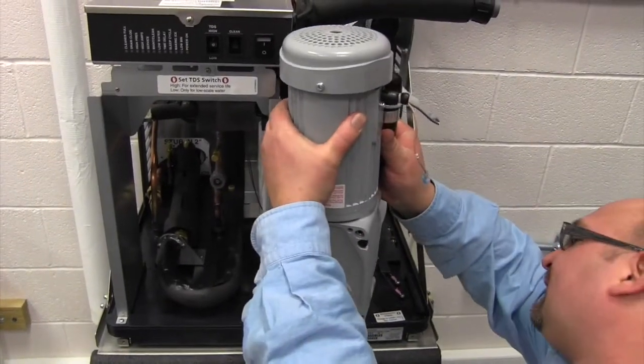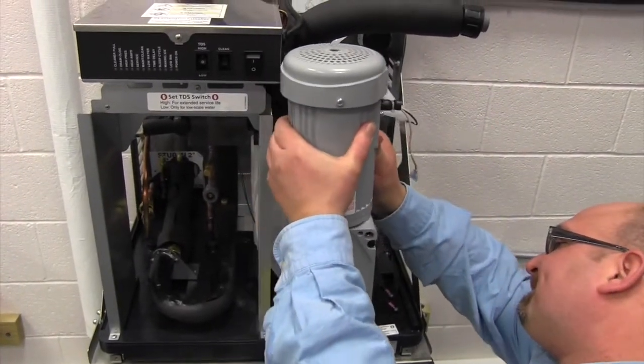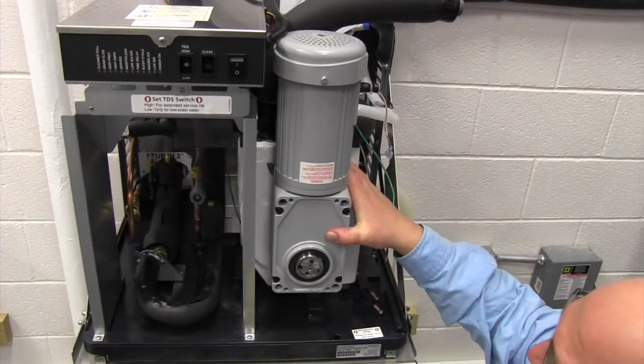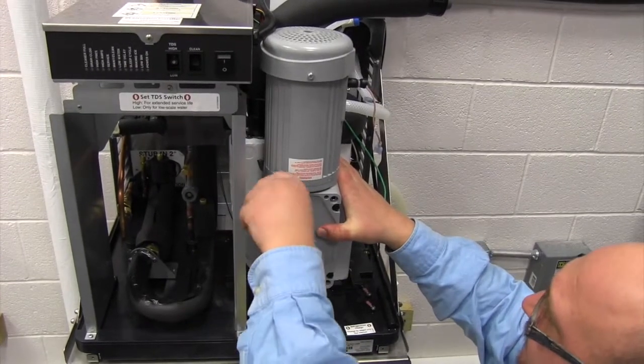We're going to lift up and put our gear motor back on the auger shaft. We're going to secure it with our two bolts.